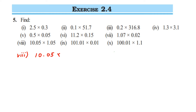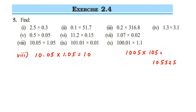The eighth question is 10.05 multiplied by 1.05. Multiply 1005 and 105, which gives the big number 105525. Now placing the decimal: the first number has two digits after the decimal, the second also has two digits, so total four digits. Counting four digits from the right — 5, 2, 5, 5 — we place the decimal, giving 10.5525.